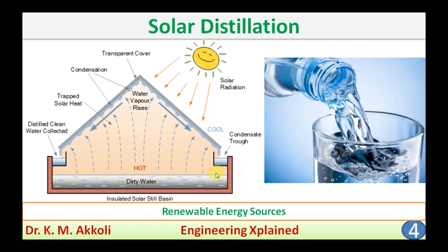Here you can see one type of the solar still distillation process. The dirty water is present in the solar still basin, and heat from the sun's radiation passes through this transparent cover, reaching the water surface, causing the water to evaporate. That vapor rises to the transparent cover layer, where it condenses due to the lower temperature, flows down the roof-shaped cover, and is collected in the troughs — giving us pure, drinkable water.